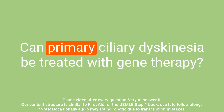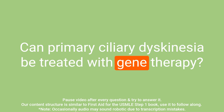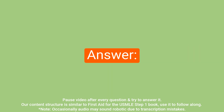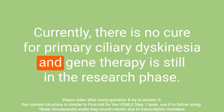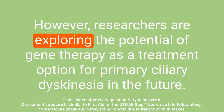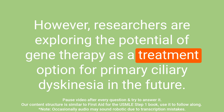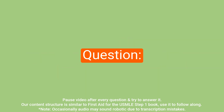Question: Can primary ciliary dyskinesia be treated with gene therapy? Answer: Currently, there is no cure and gene therapy is still in the research phase. However, researchers are exploring the potential of gene therapy as a treatment option for primary ciliary dyskinesia in the future.